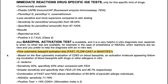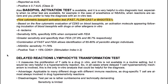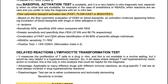The basophil activation test is a very helpful in vitro diagnostic tool, especially when no other tests are available — for example in the case of anesthetics or NSAIDs — or when reactions are severe and you prefer an in vitro diagnosis. Flow cytometric basophil activation tests are based on evaluation of CD63 on blood basophils, an activation molecule appearing following incubation of blood basophils with drugs or allergens in vitro. For beta-lactams: sensitivity of 50% and specificity of 93%.